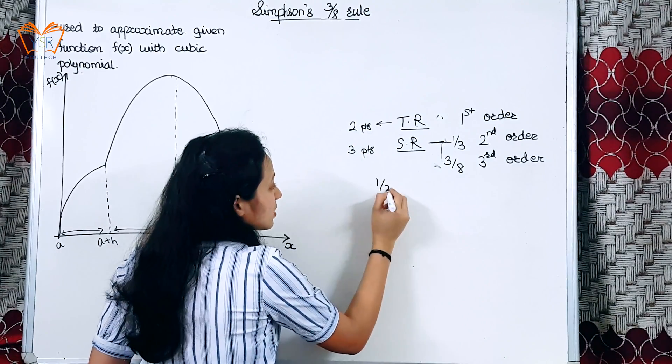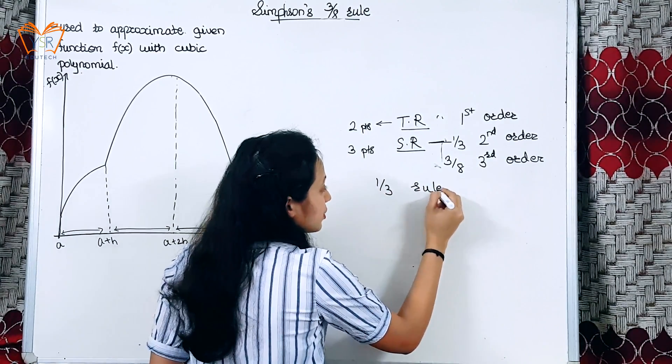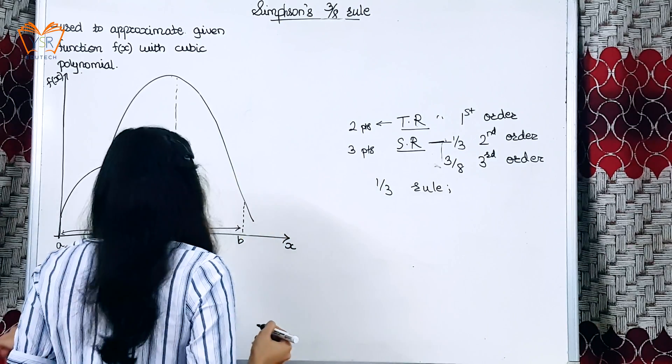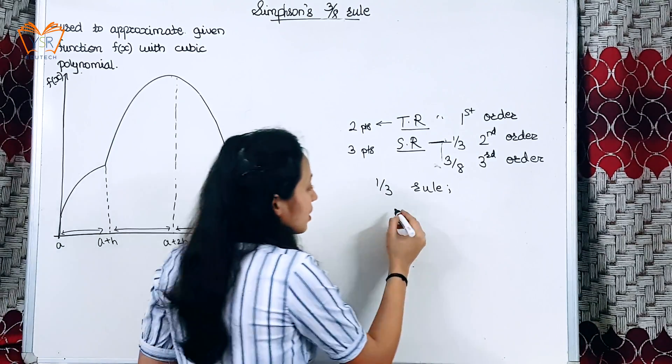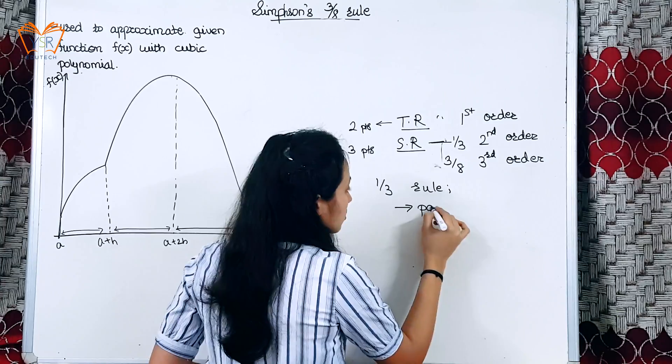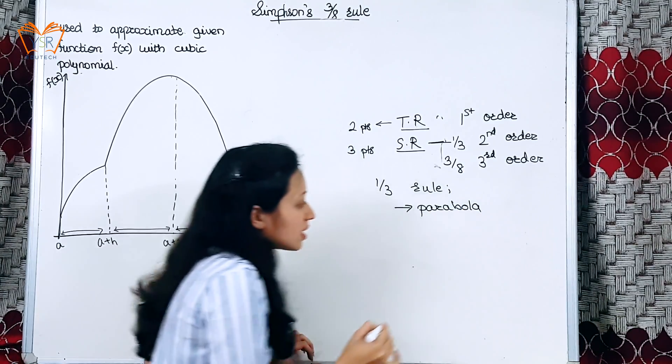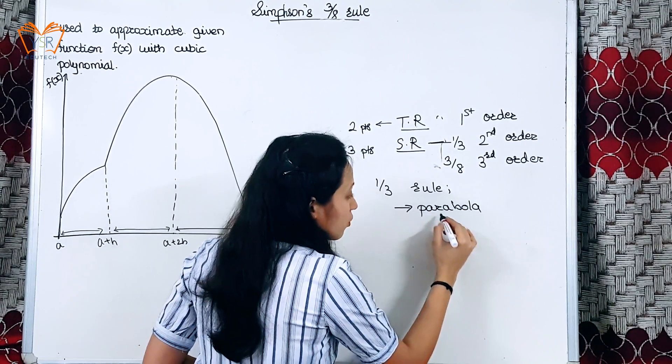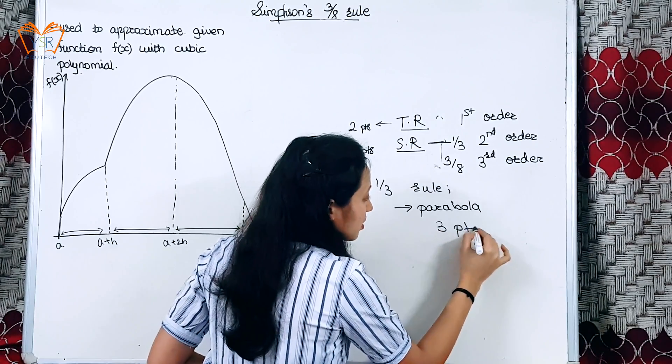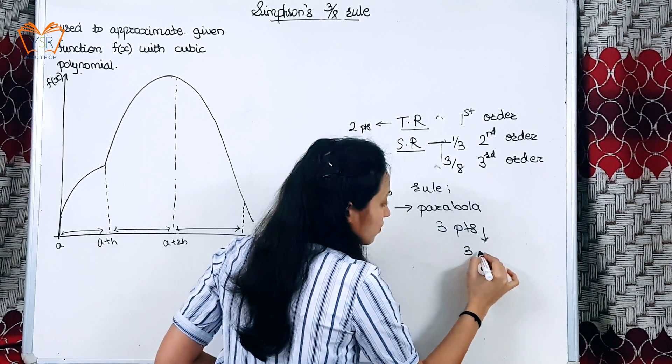Now in Simpson's one-third rule, what we did was we drew a parabola or second order function, and we then obtained for three points, we got three unknown coefficients.